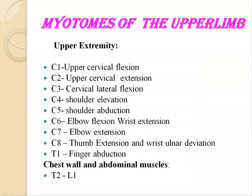Now let us move on to the myotomes. A myotome is a group of muscles supplied by a single spinal nerve. For the upper limb: C1 produces upper cervical flexion, C2 upper cervical extension, C3 cervical lateral flexion, C4 shoulder elevation, C5 shoulder abduction, C6 elbow flexion and wrist extension, C7 elbow extension, C8 thumb extension and wrist ulnar deviation, T1 finger abduction. The chest wall and abdominal muscles cover levels T2 to L1.